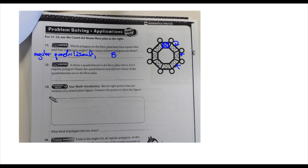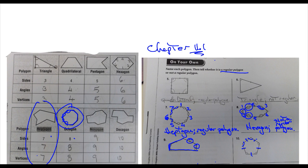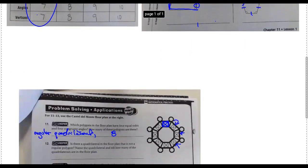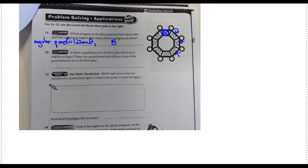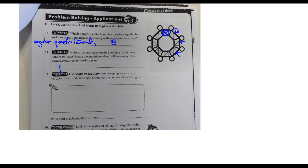Number twelve says: is there a quadrilateral in the floor plan that is not a regular polygon? Name that quadrilateral and tell how many of those quadrilaterals are in the floor plan. The answer is yes. The shape is a trapezoid — you can look up what a trapezoid is in the handout I gave you. Then count how many of them are there.